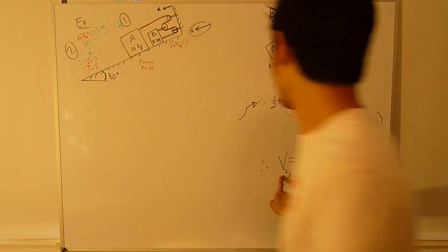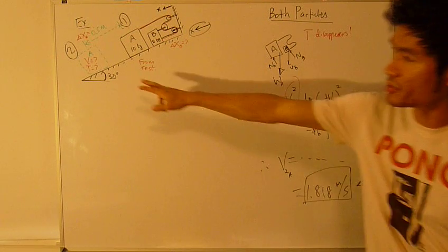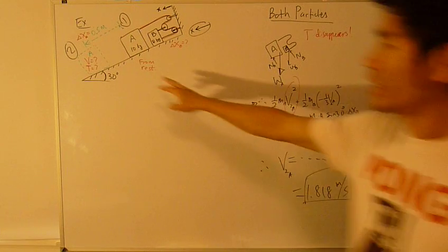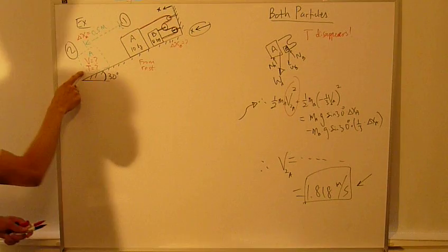So now that we've found the velocity of A in the final position after A has traveled 25 meters, we'd like to find the second unknown, which is tension.